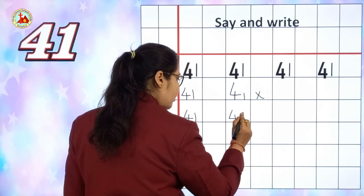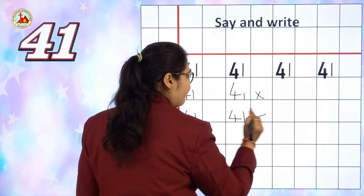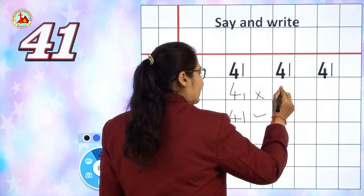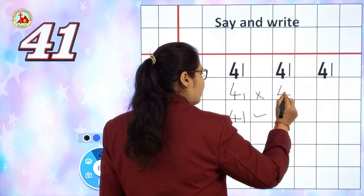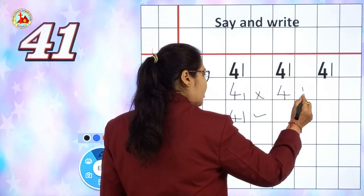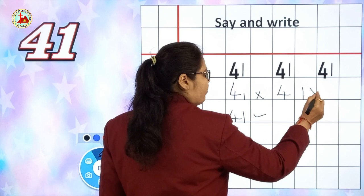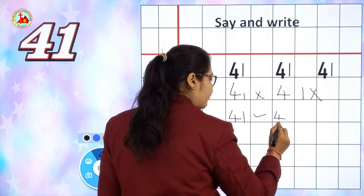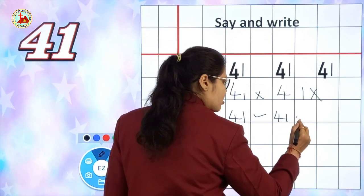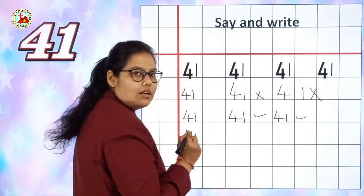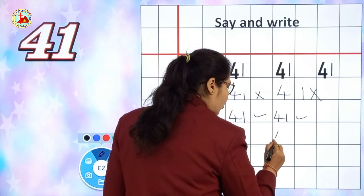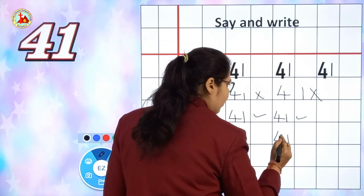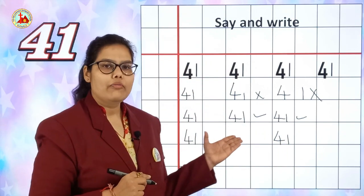41. This is the right way to write number 41. Children, so many of you are writing the number like this — one number in one box and another number in another box. This is the wrong way to write. You have to write both numbers in the same box, in one box. This is the right way to write the number. 41. Like this way you have to write number 41.